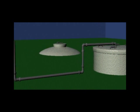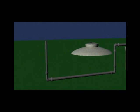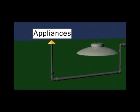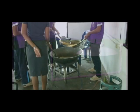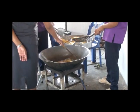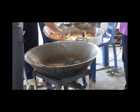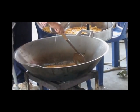The hose from the digester tank can be connected to different appliances to use the biogas. For example, a hose can connect the digester tank to a stove and then the gas can be used for cooking.